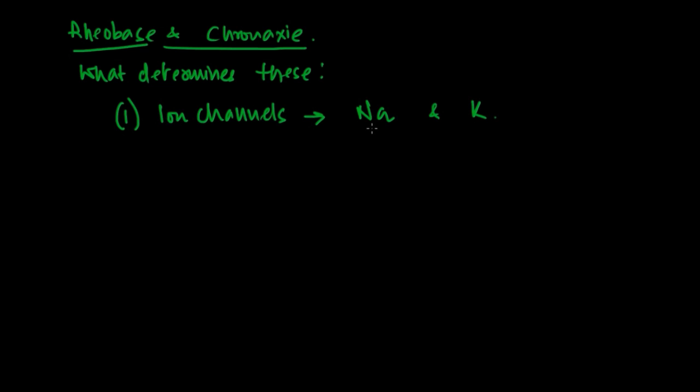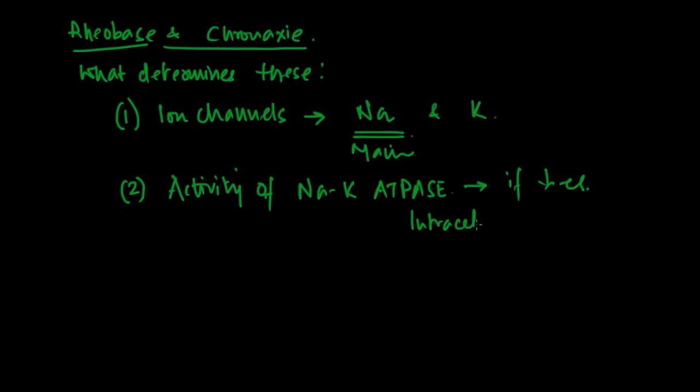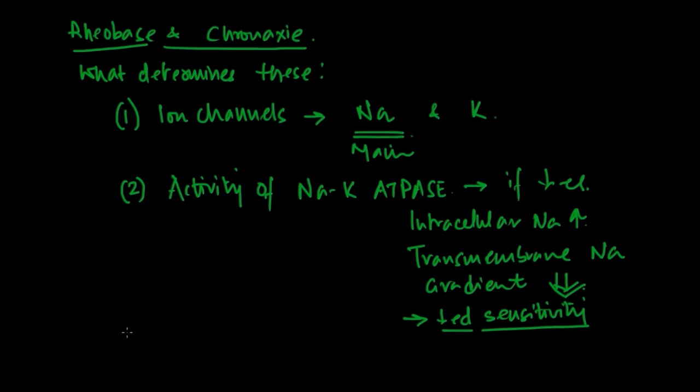One factor that determines rheobase and chronaxie is ion channels, where sodium is more important than potassium because the sodium gradient is larger. Second is activity of sodium-potassium ATPase which recalibrates the membrane. If this activity goes down, intracellular sodium goes up, transmembrane sodium gradient reduces, reducing nerve sensitivity and requiring higher current.